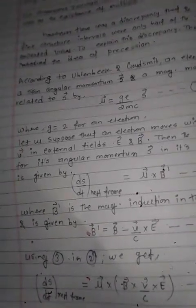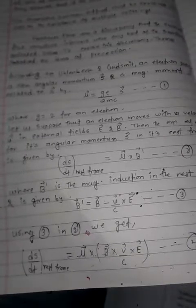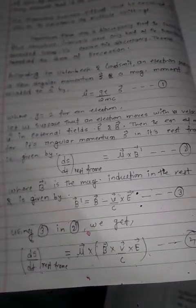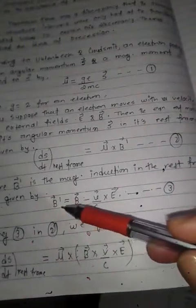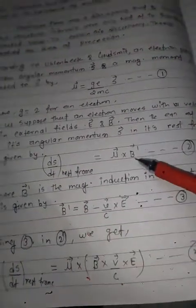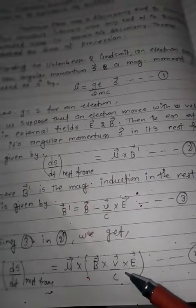The equation of motion for angular momentum S in the rest frame gives dS/dt (rest frame) = μ × B', where B' is the magnetic induction in the rest frame given by B' = B − (V/c) × E. Using equation 3 in equation 2, we get dS/dt (rest frame) = μ × [B − (V/c) × E]. (Equation 4)